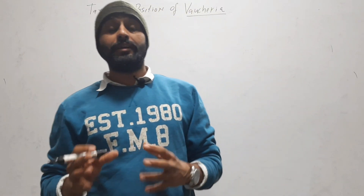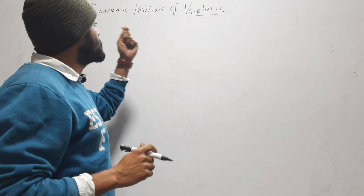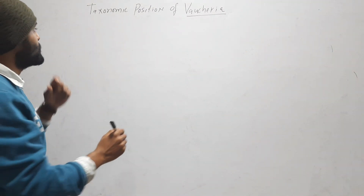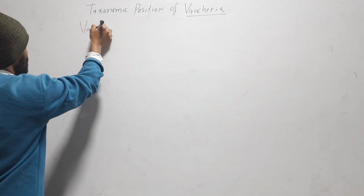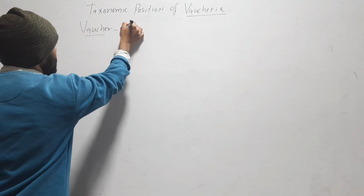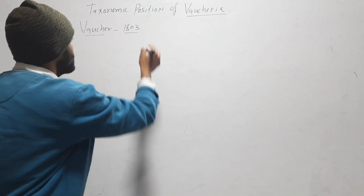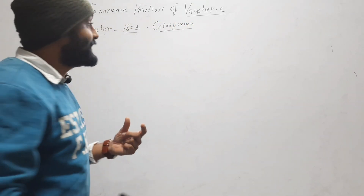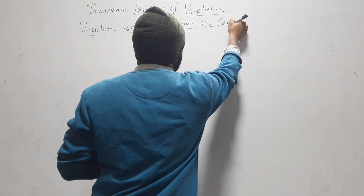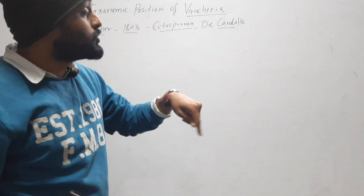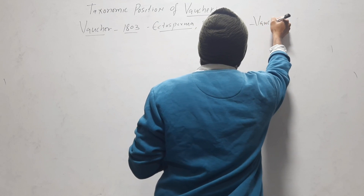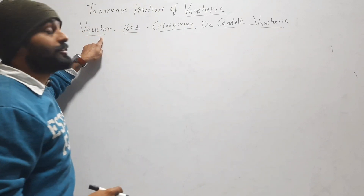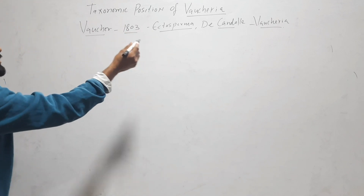Welcome to my YouTube channel. In this video we will discuss the taxonomic position of Vaucheria. The taxonomic position of Vaucheria is much debated and very controversial. This genus was first discovered by Vaucher in 1803 and he named it Ectosperma. Later, de Candolle changed its name from Ectosperma to Vaucheria, naming it in honor of its discoverer.